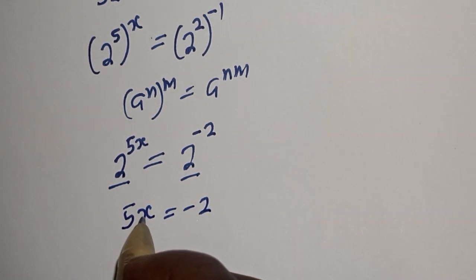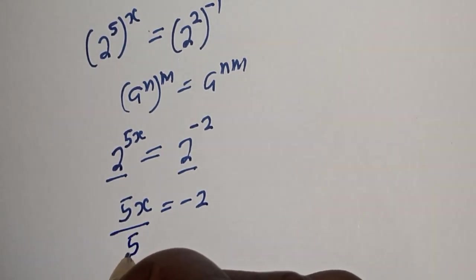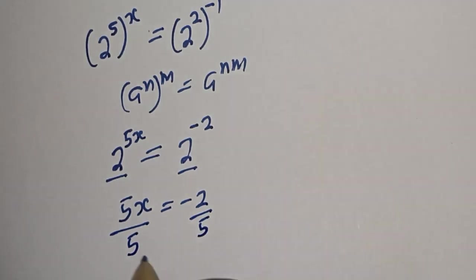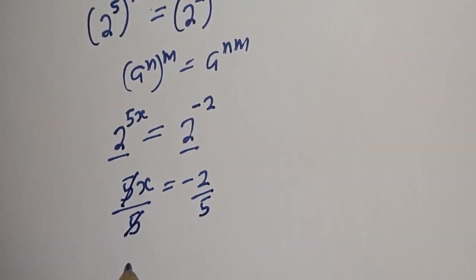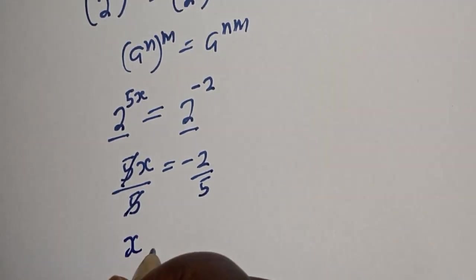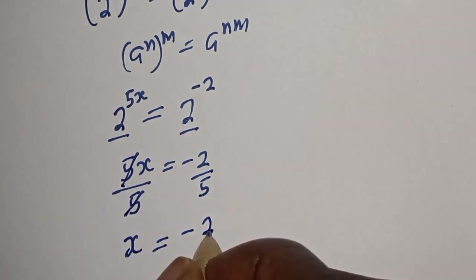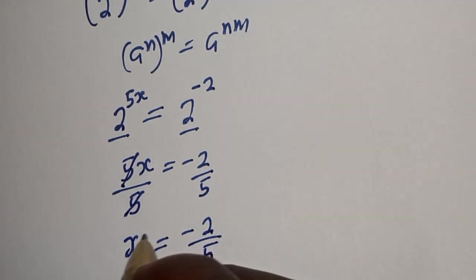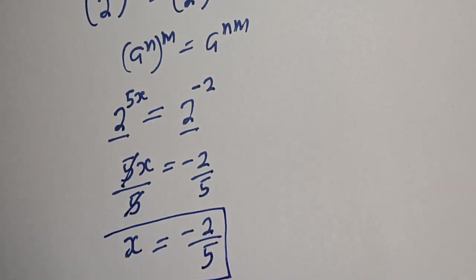Since we are looking for the value of s, let's divide both sides by 5. This will cancel, giving s equals minus 2 over 5. This is the final answer.